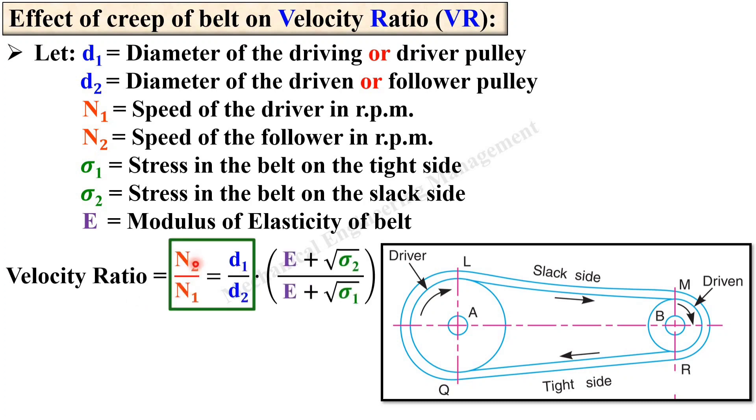Now you know that velocity ratio N2 upon N1 is equal to d1 upon d2 without considering the creep. But if you consider the creep then this is the factor that should be multiplied with d1 upon d2: E plus square root of sigma 2 upon E plus square root of sigma 1. Here keep in mind sigma 1 is always greater than sigma 2 because sigma 1 is the stress in the tight side and so this term is always less than 1 and so the velocity ratio is always reduced due to the creep.